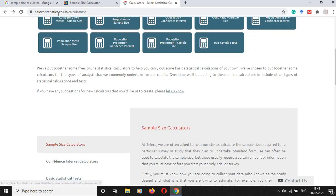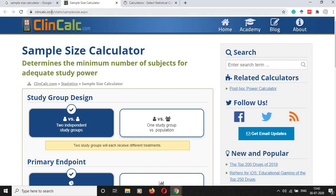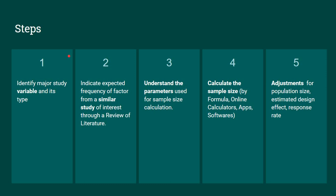Select-statistics.co.uk and cleancalc.com are easy to use. To summarize, we have five steps in sample size calculation. Step one: identify the major study variable and its type, whether estimating a mean or a proportion. Step two: do a thorough review of literature to get a similar study and the expected frequency of the variable. Step three: understand the parameters used for sample size calculation. Step four: calculate the sample size by formula, online calculators, apps, or softwares. Step five: adjustments — finite population correction, design effect adjustment, and adjustment for response rate.